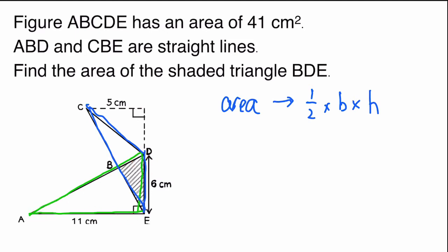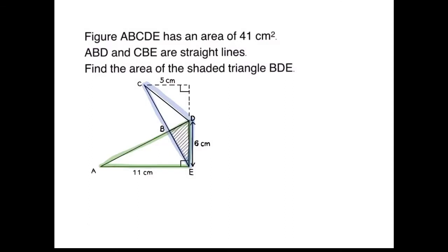Now let's look at the blue triangle. We have to zoom in to the perpendicular line here to find the base and the height. The base will be here, and the height is 5 centimeters. Remember, it's not this slant — it's this 5 centimeters. So how do we find the area of the shaded triangle BDE? First thing we need to take note is 41 square centimeters.